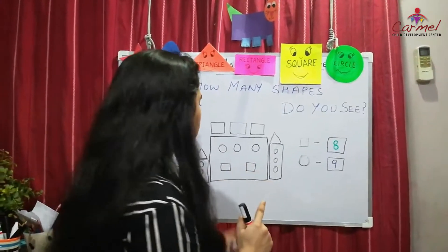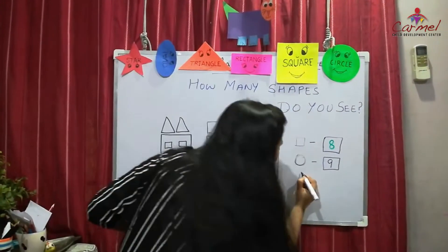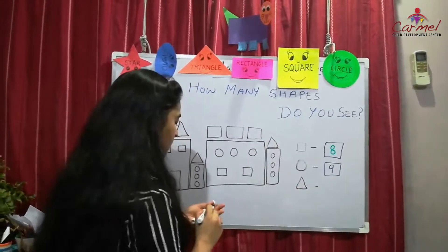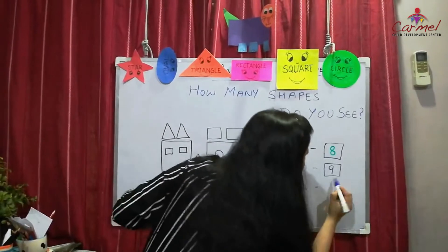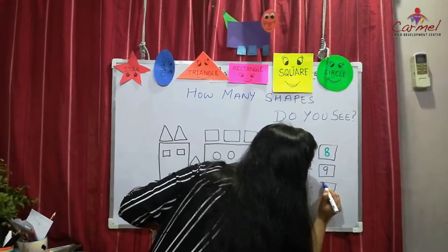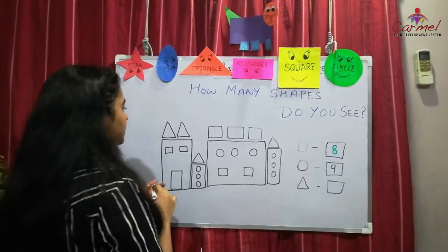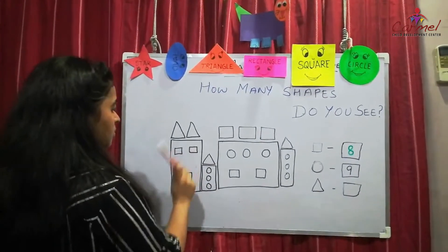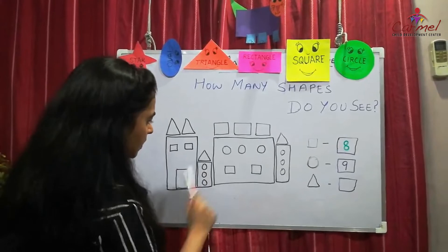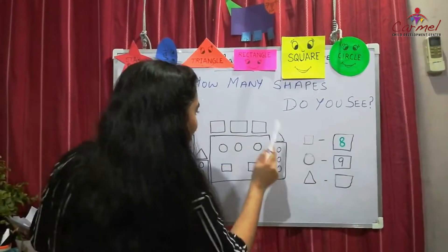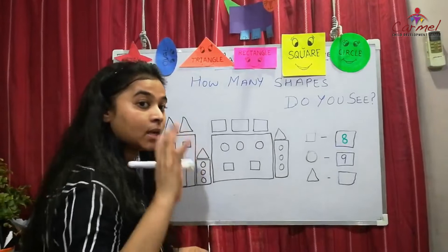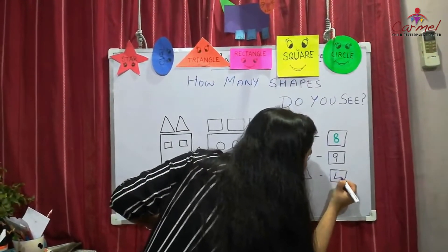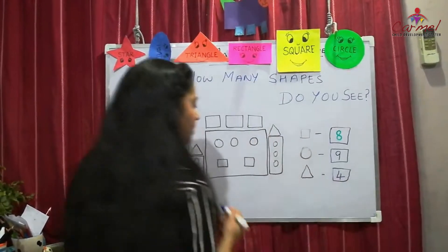Now let's count the triangles. How many triangles are there? Let's count: one, two, three, four. There are 4 triangles. Write number 4 inside the box.